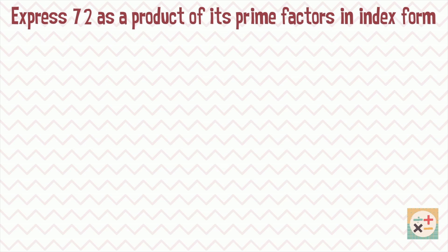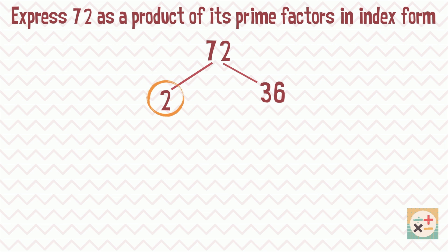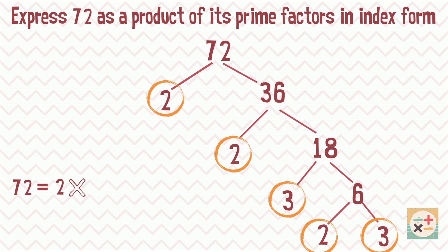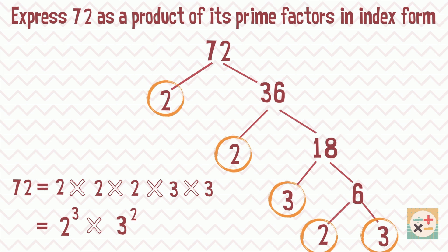Let's look at another example. This question is slightly different as it asks us to list the prime factors in index form. We can complete the factor tree in the same way as the previous example. Next, we write out the prime factors in order from the smallest prime factor to the largest. Then we can simplify this using powers. We have now listed the prime factors of 72 in index form.